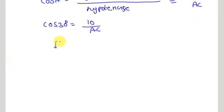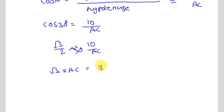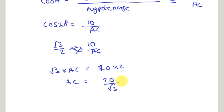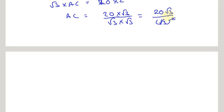Substituting: √3 / 2 = 10 / AC. On cross multiplication, √3 × AC = 20, so AC = 20 / √3. Since the denominator is irrational, we rationalize by multiplying by √3 / √3, giving 20√3 / 3. This is the length of one rope.